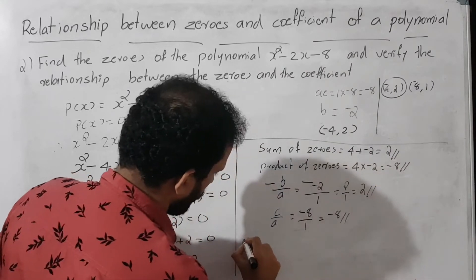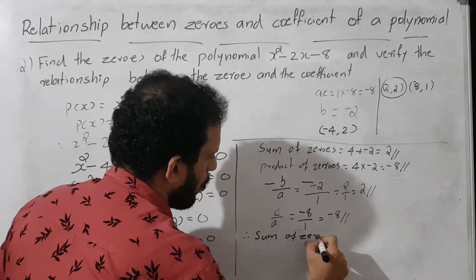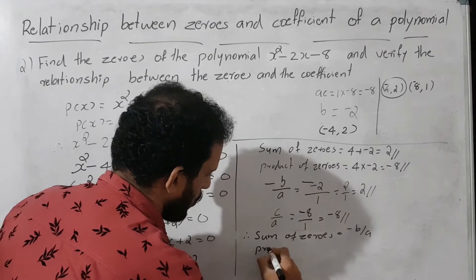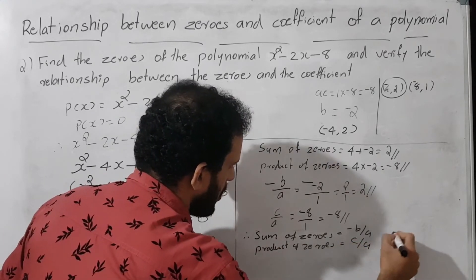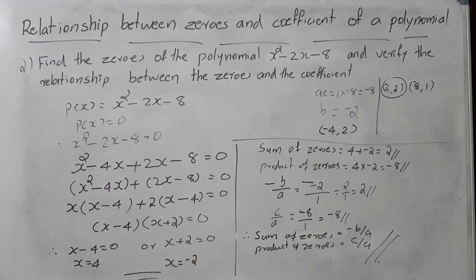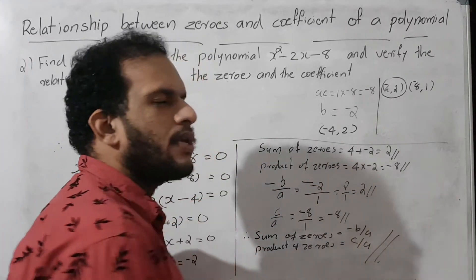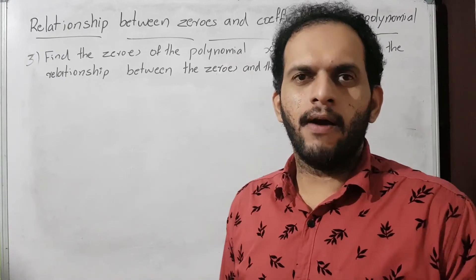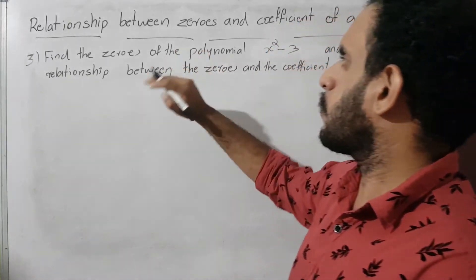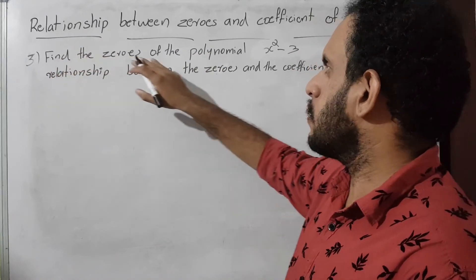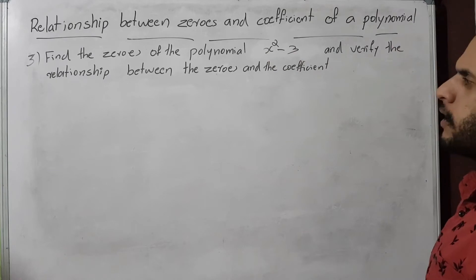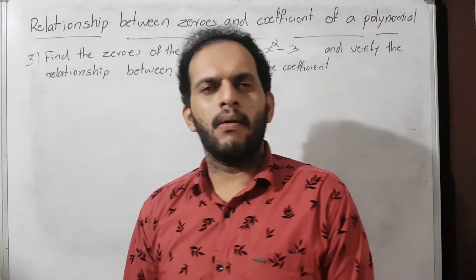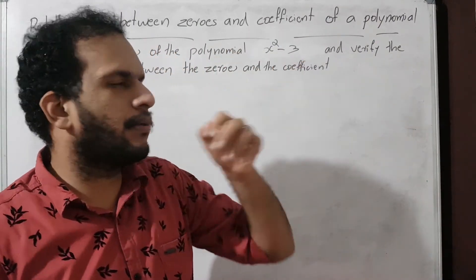Therefore sum of zeros equals minus B by A, and product of zeros equals C by A. This is the verification for the second question. Now we go to the next type of question: find the zeros of x² minus 3 and verify the relationship.